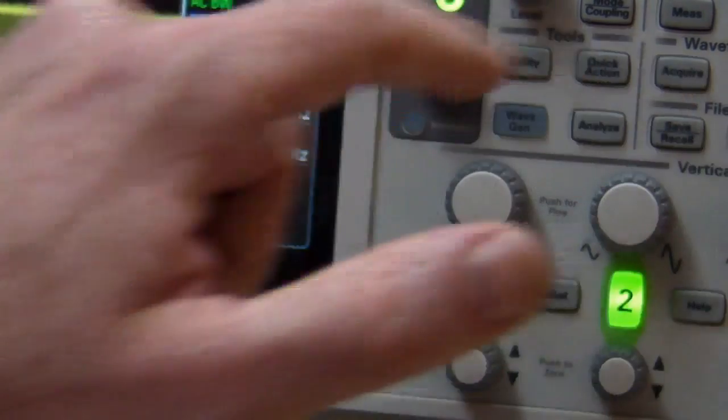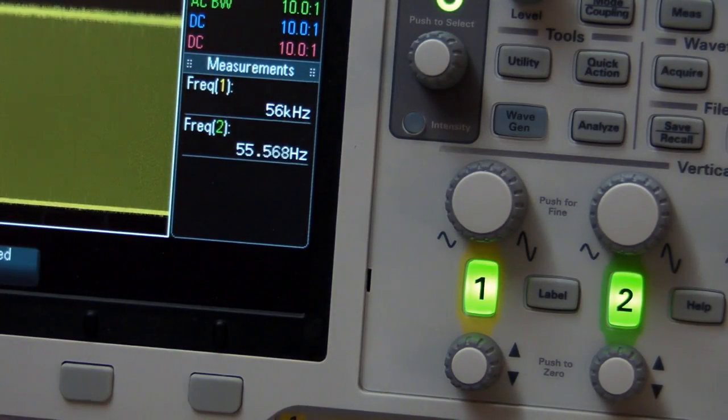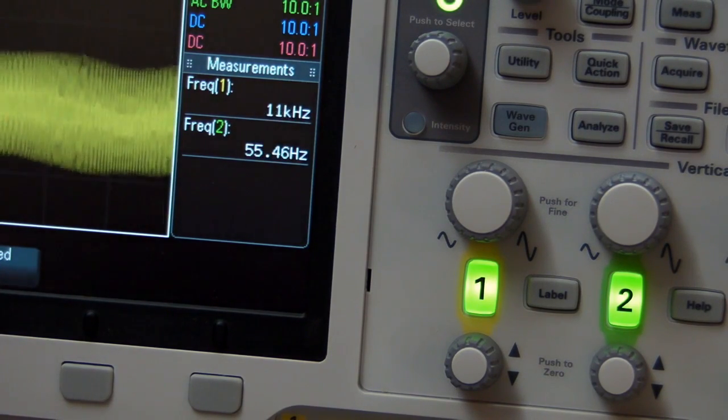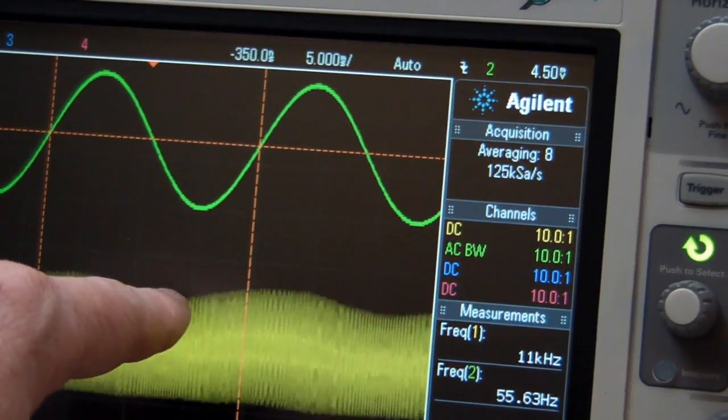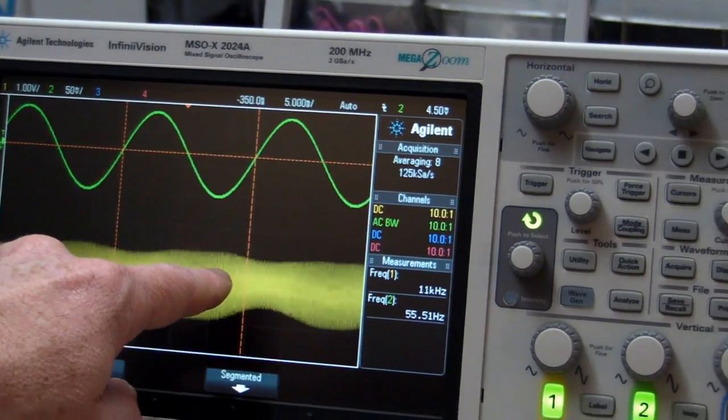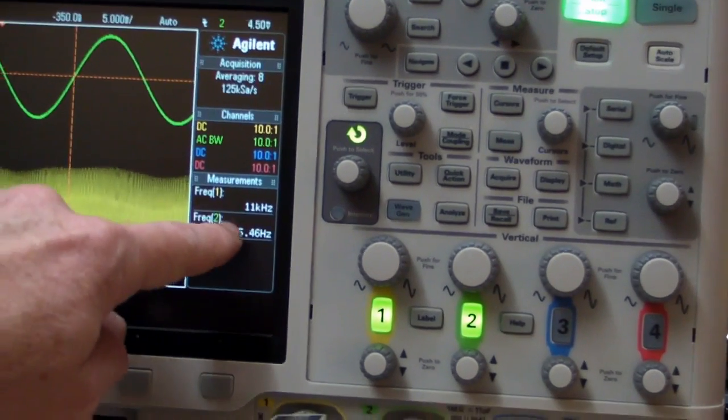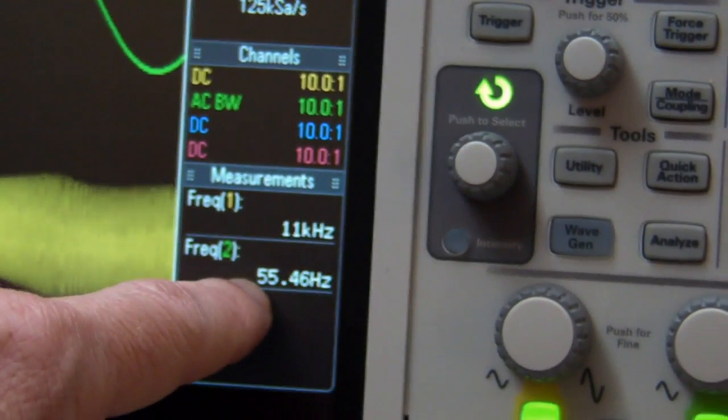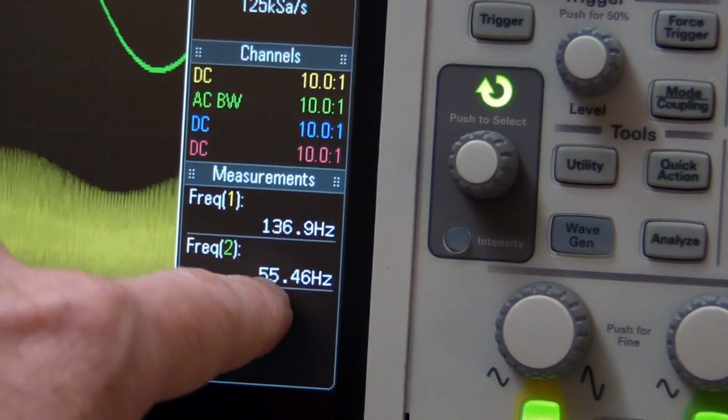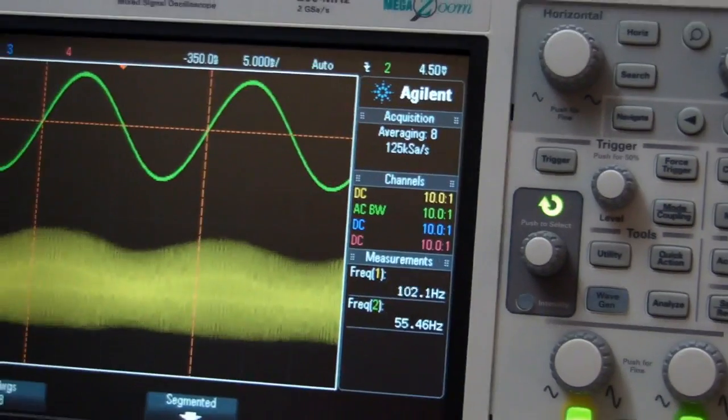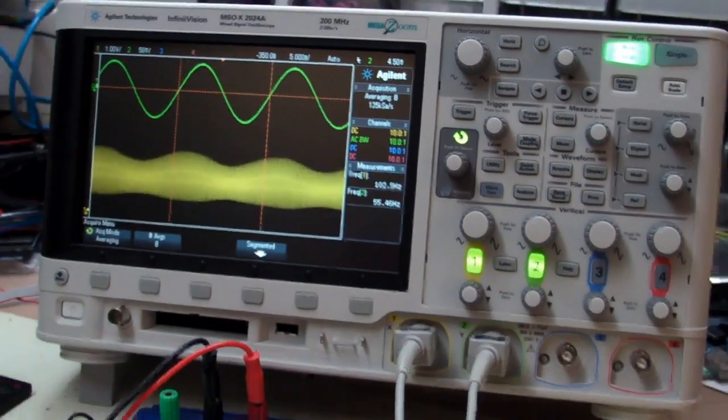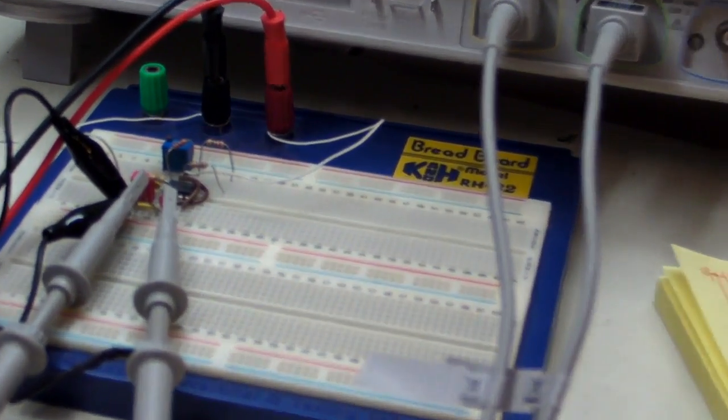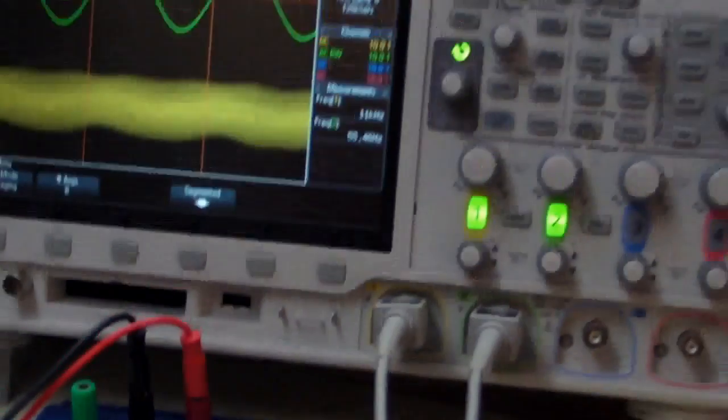We can turn the averaging up a bit more here. Let's turn the averaging on. You'll see that the other waveform disappears, of course, because we're now averaging. And check it out. Look. The frequency of that channel, the modulation is 55.5 Hz at 55.5 kHz in this circuit. What the hell is going on? It's nuts.